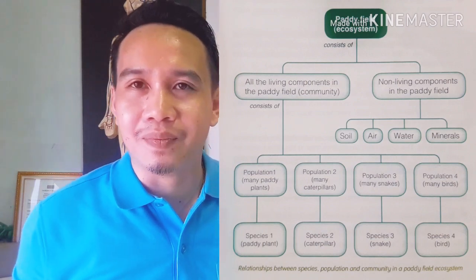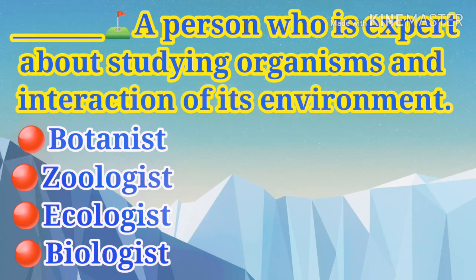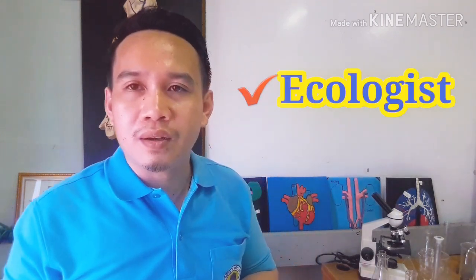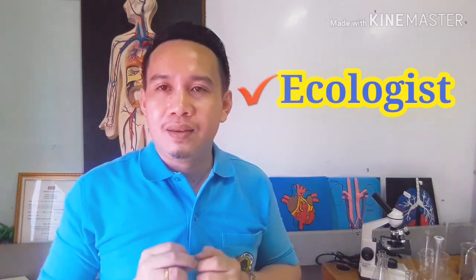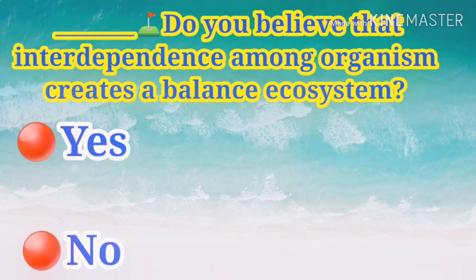The non-living components in that paddy field ecosystem are soil, air, water, and minerals. That is what typically composes one ecosystem. Now, do you know who studies living things and their relationships to their environment? That person is called an ecologist. Ecologists focus on studying organisms and their interactions with their environment.